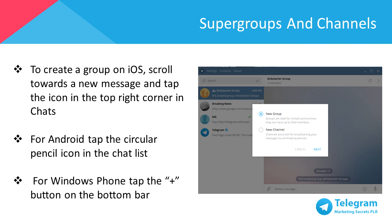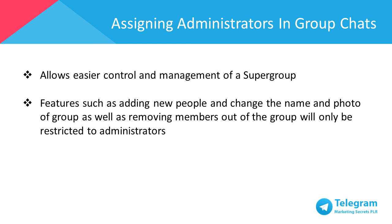To create a group on iOS, scroll to a new message and tap the icon on the top right corner in chats. For Android, tap the circular pencil icon in the chat list. For Windows Phone, tap the plus button on the bottom bar. Generally, running small group chats can be easily managed by a single person, and everyone in the group can invite new members in. Anyone can change the group's name and photo as well.